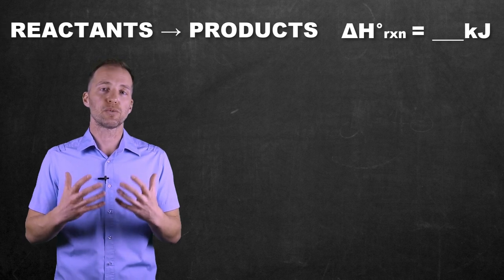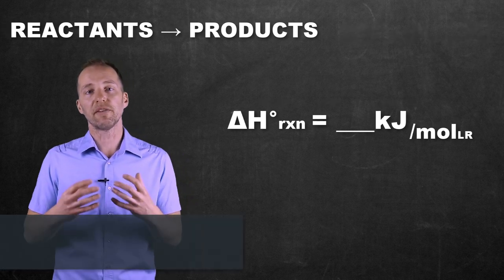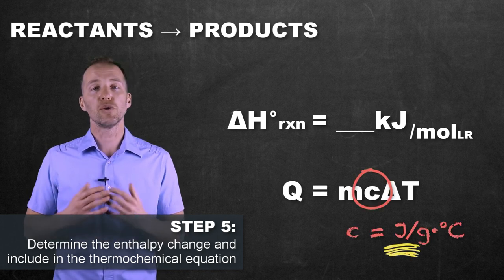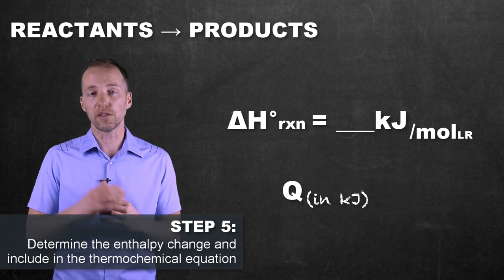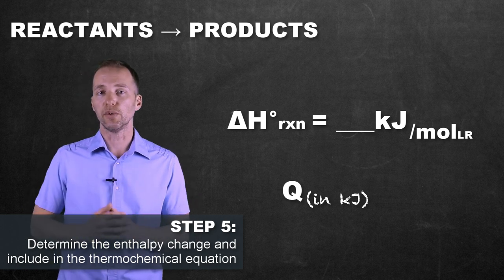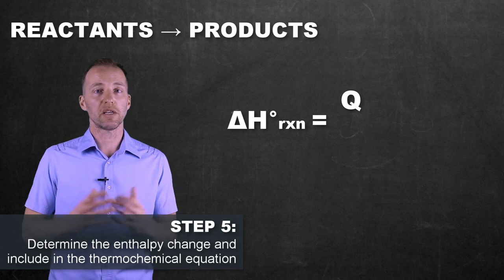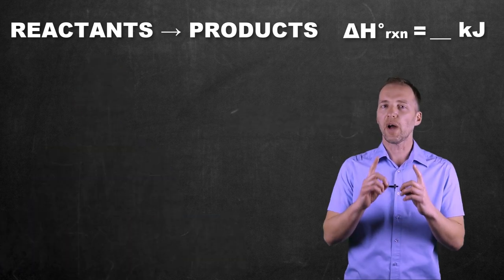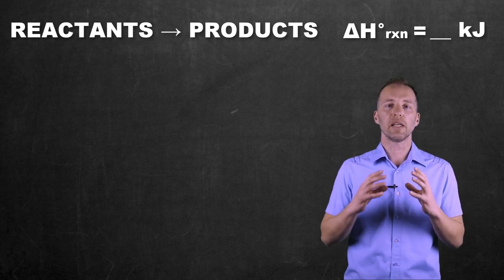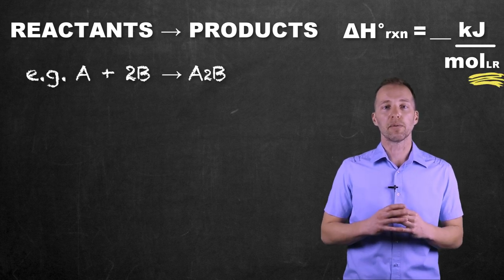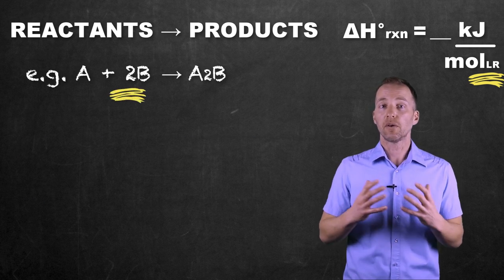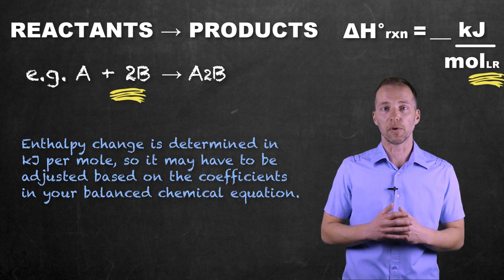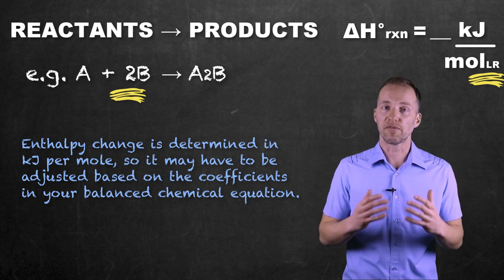Enthalpy change is expressed in kilojoules per mole. We need to figure out how much energy is released or absorbed in kilojoules — remember our Q from Q = mcΔT was in joules, so we need to convert it to kilojoules. Then we use the relationship where the overall enthalpy change equals Q divided by n, where n is the number of moles of the limiting reagent. Keep in mind: if the limiting reagent has a coefficient other than 1 in the balanced equation, you'll need to adjust your enthalpy value accordingly before writing the final thermochemical equation.